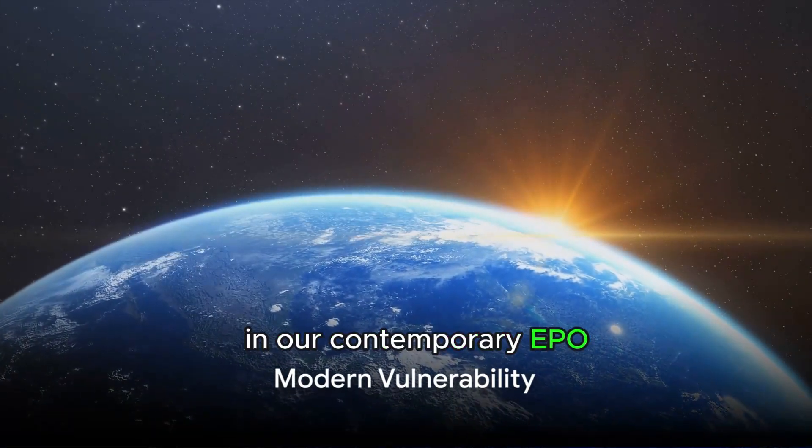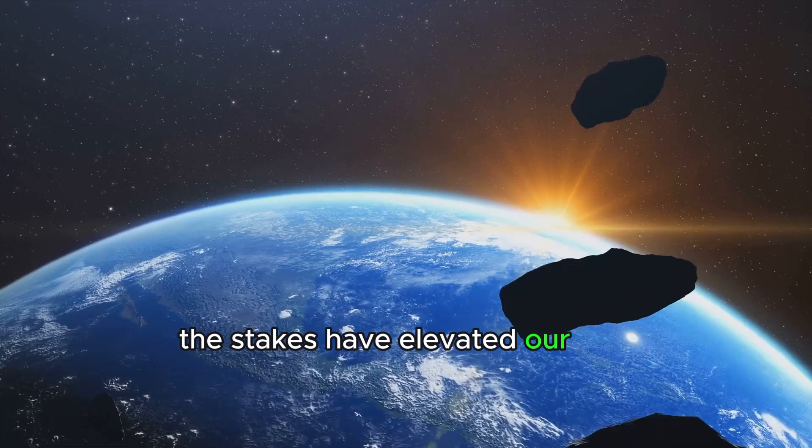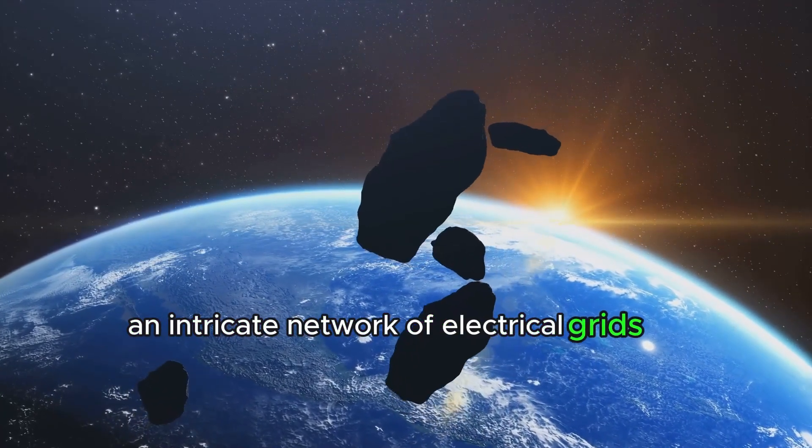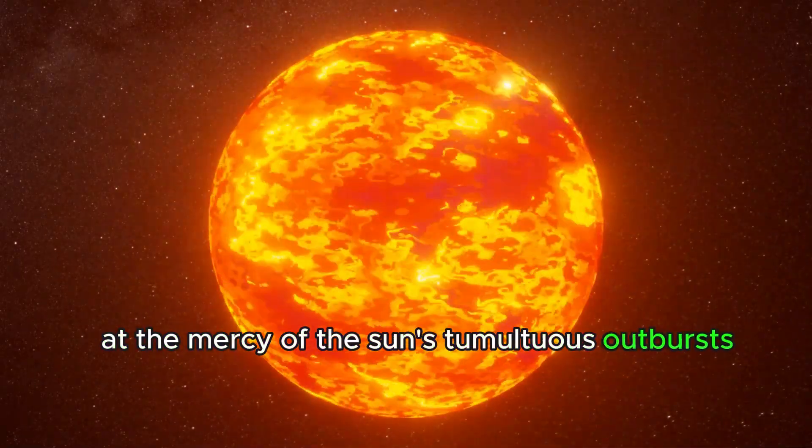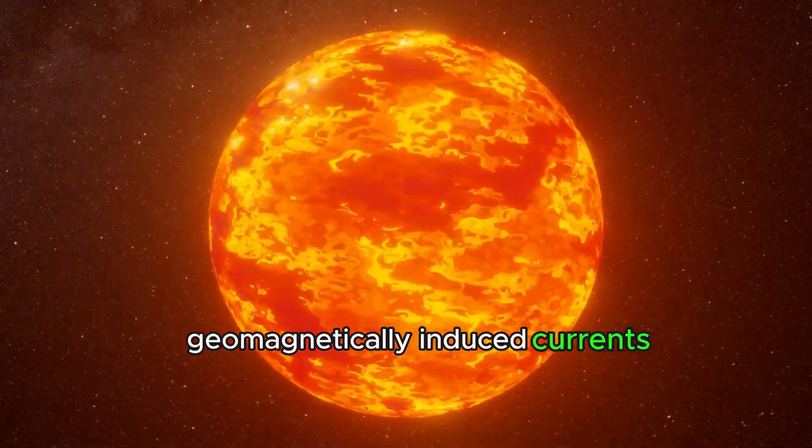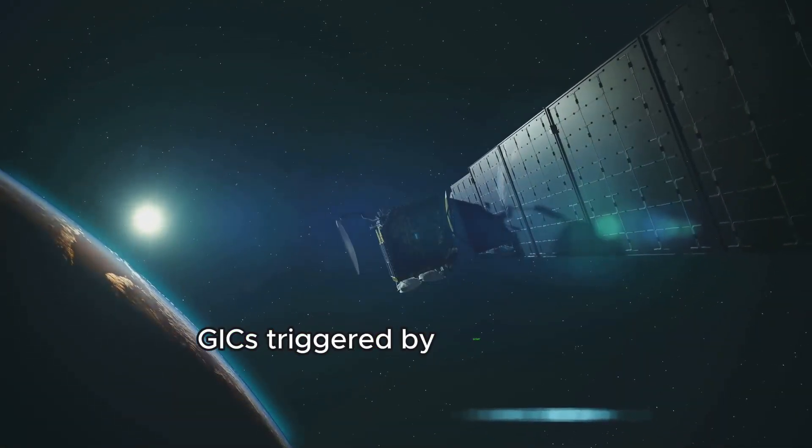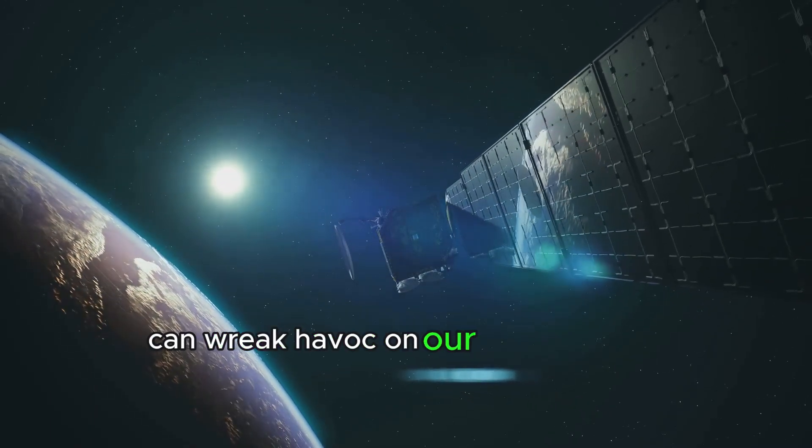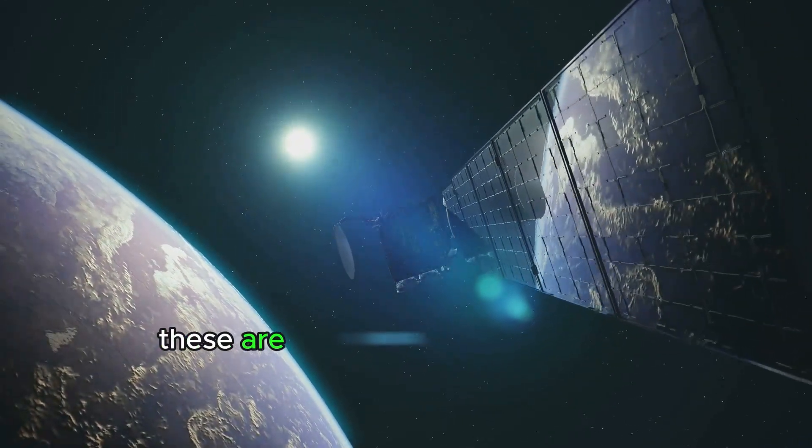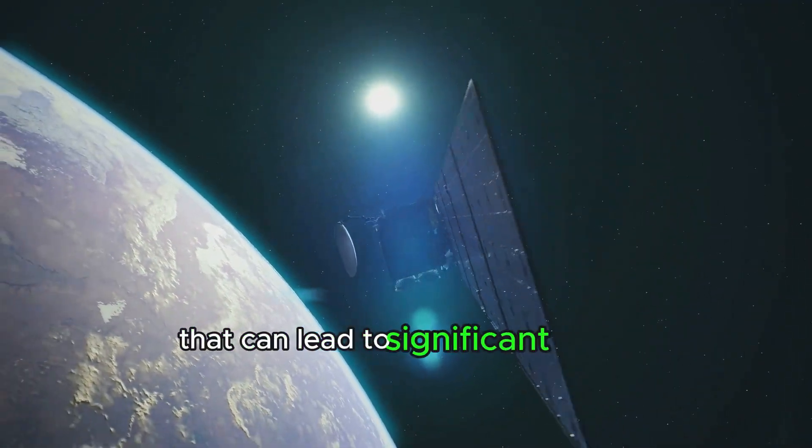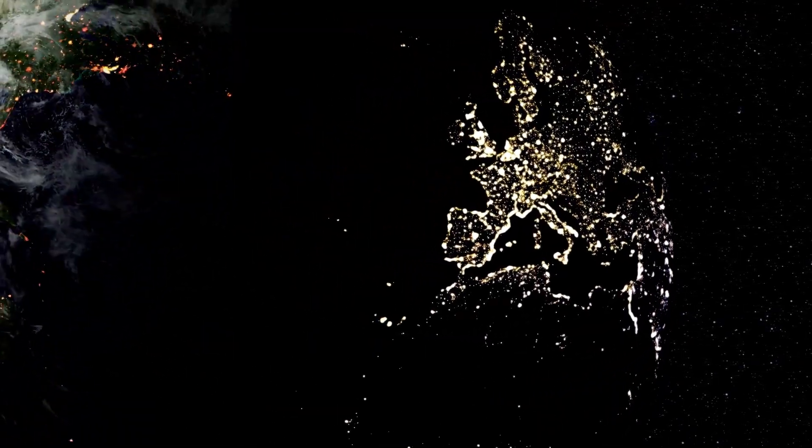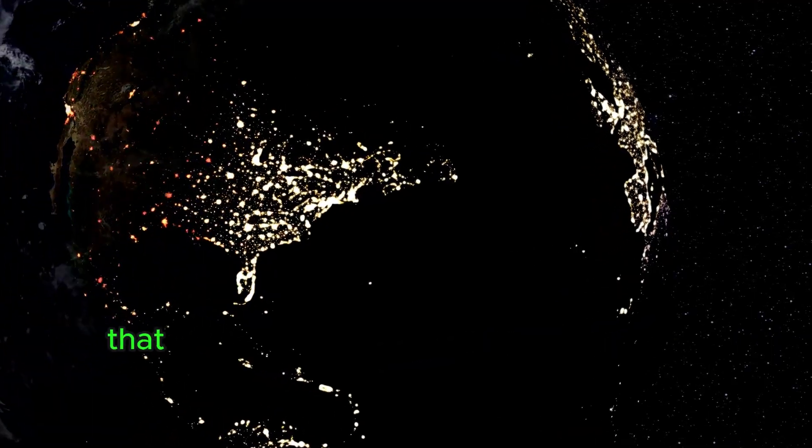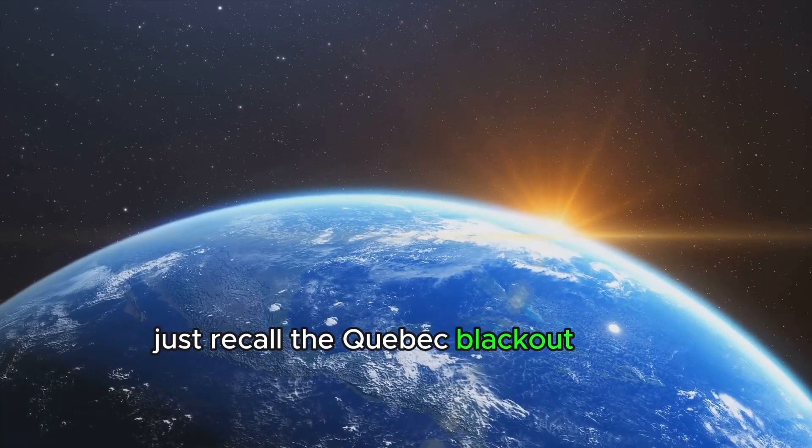In our contemporary epoch, the stakes have elevated. Our world, an intricate network of electrical grids and systems, continues to be at the mercy of the Sun's tumultuous outbursts. Geomagnetically induced currents (GICs), triggered by solar activities, can wreak havoc on our power systems. These are enhanced electrical currents that can lead to significant damage to power transformers, the backbone of our electrical infrastructure. The damage can be so profound that it can lead to widespread power outages on a massive scale. Just recall the Quebec blackout of 1989.